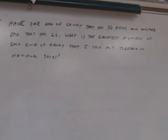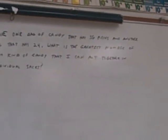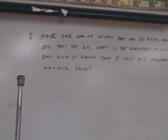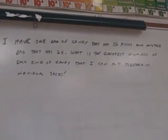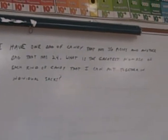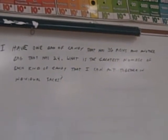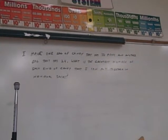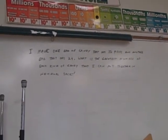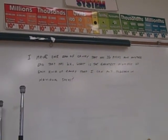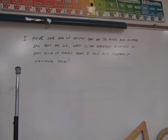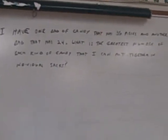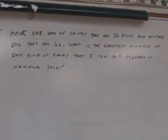Looking at just a simple story like this: I have one bag of candy that has 36 pieces in it and another bag that has 24 in it. Two different bags. And I'm trying to put them together in individual sacks, one piece of candy from one bag in there, one from the other bag. I want to know what is the greatest number of each kind of candy that will be in that bag, each individual bag.